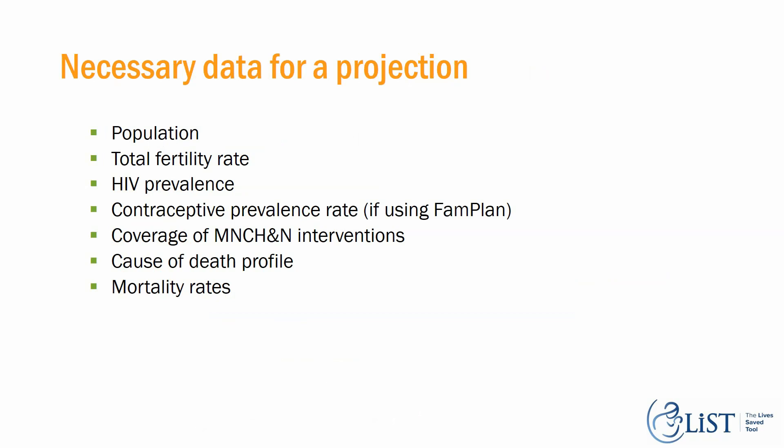The necessary data for a projection in general are: population, total fertility rate, HIV prevalence, contraception prevalence rate if using the family planning module, coverage of maternal, newborn, and child health and nutrition interventions, cause of death profile, and mortality rates.